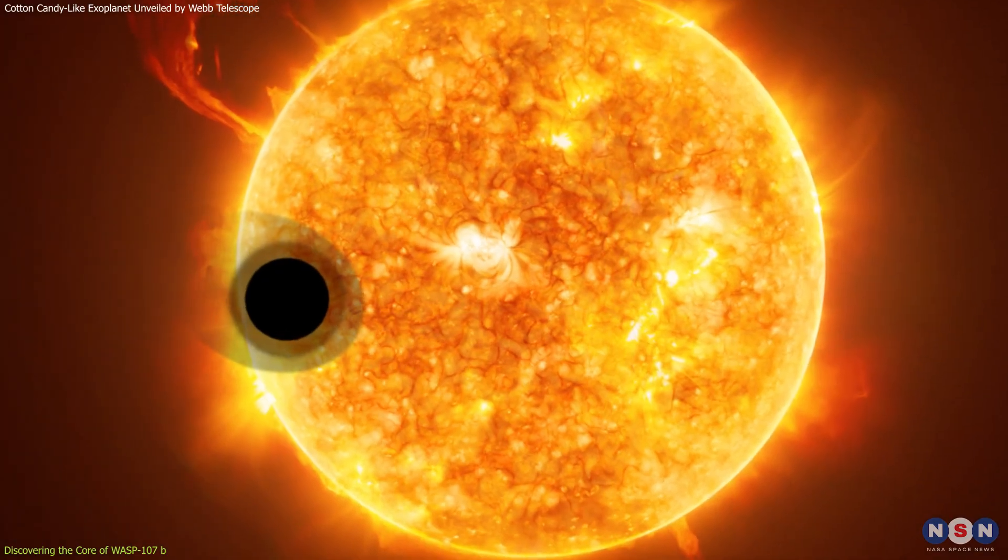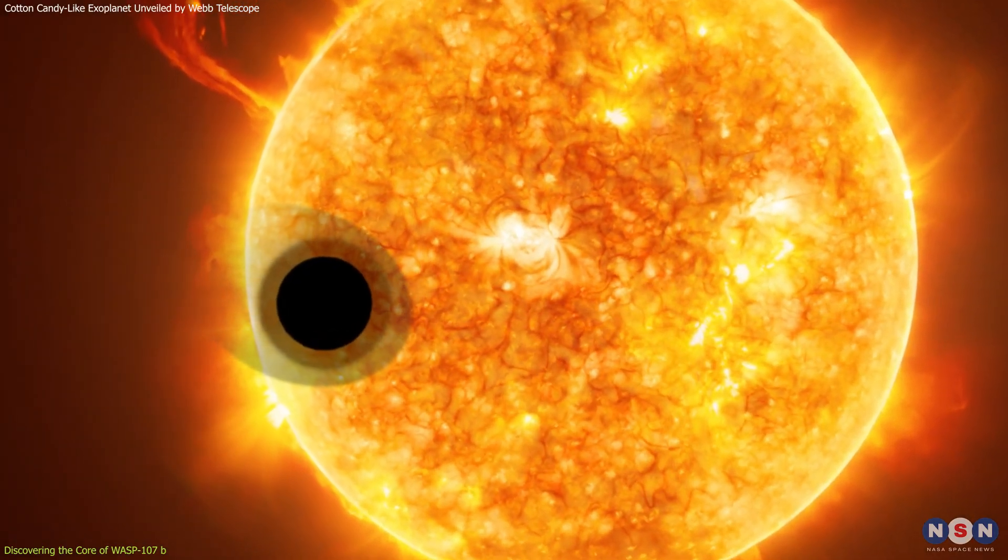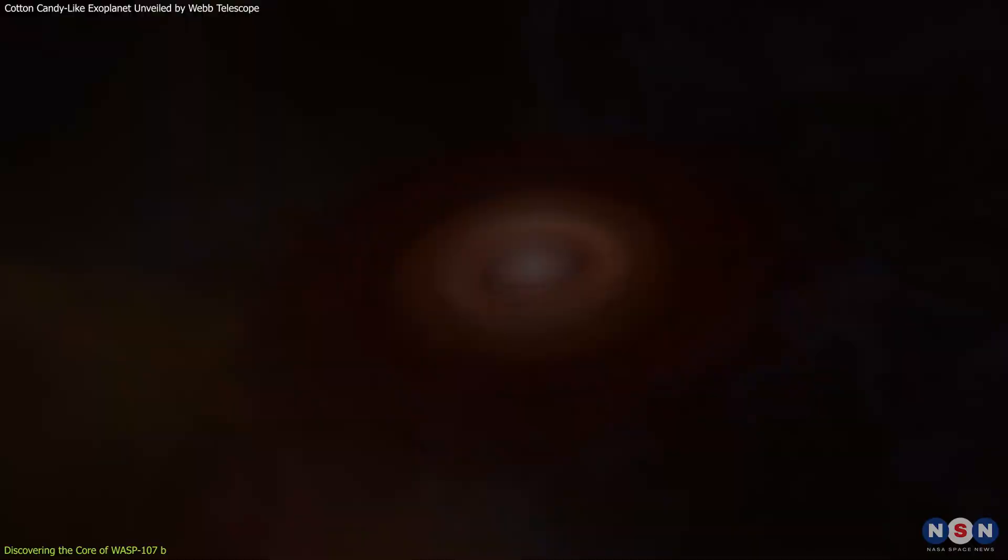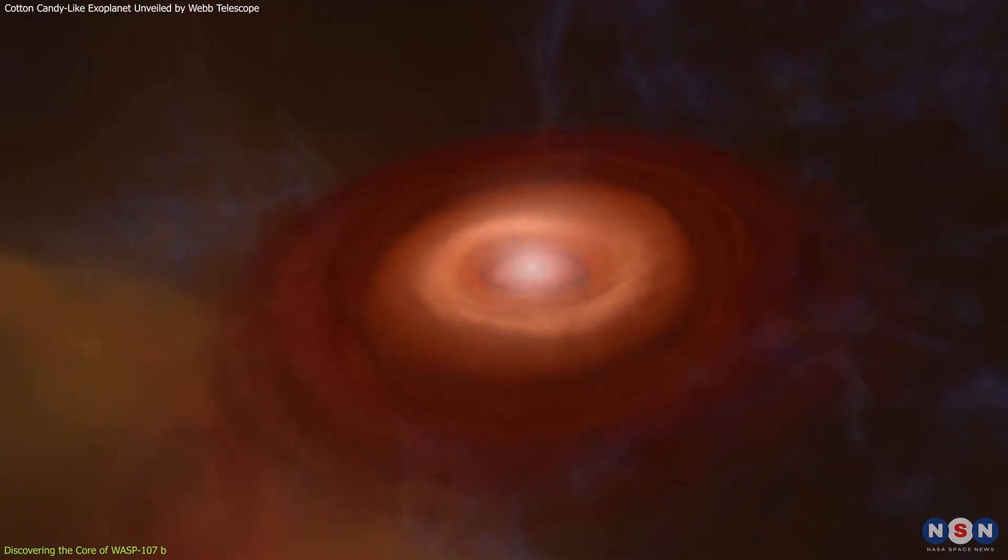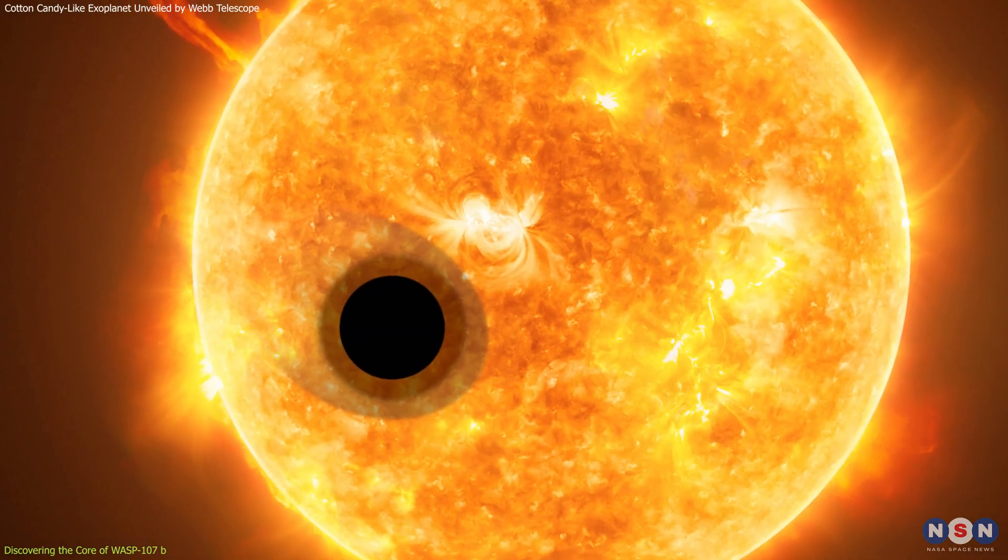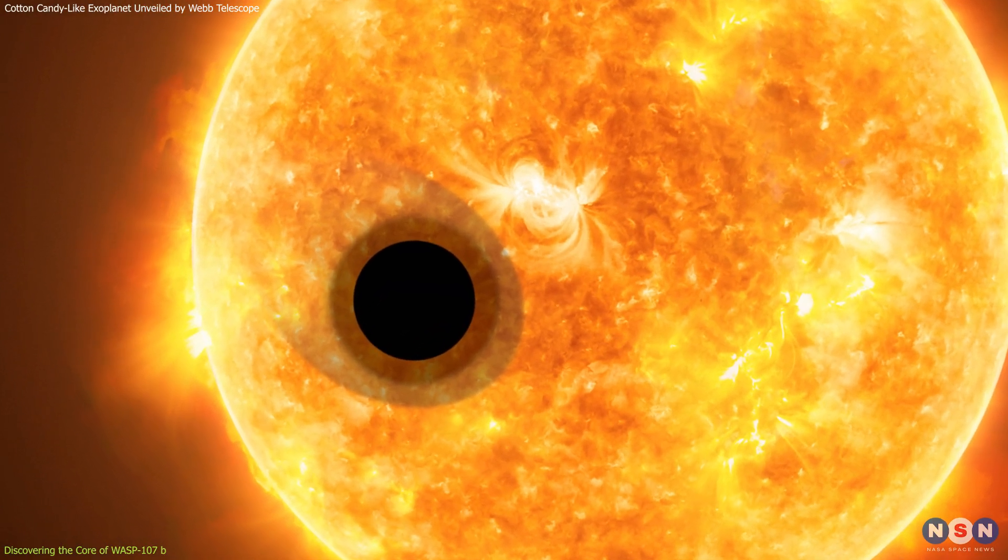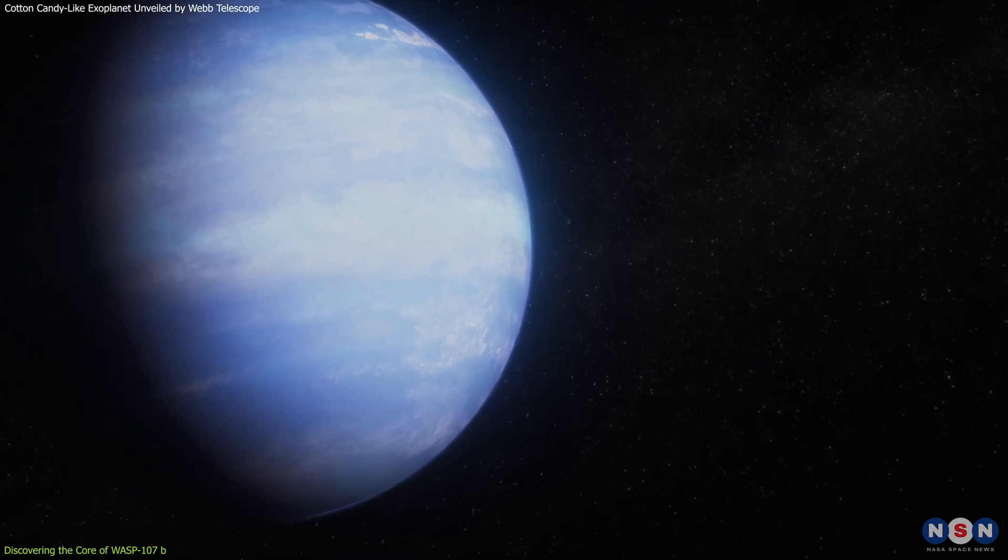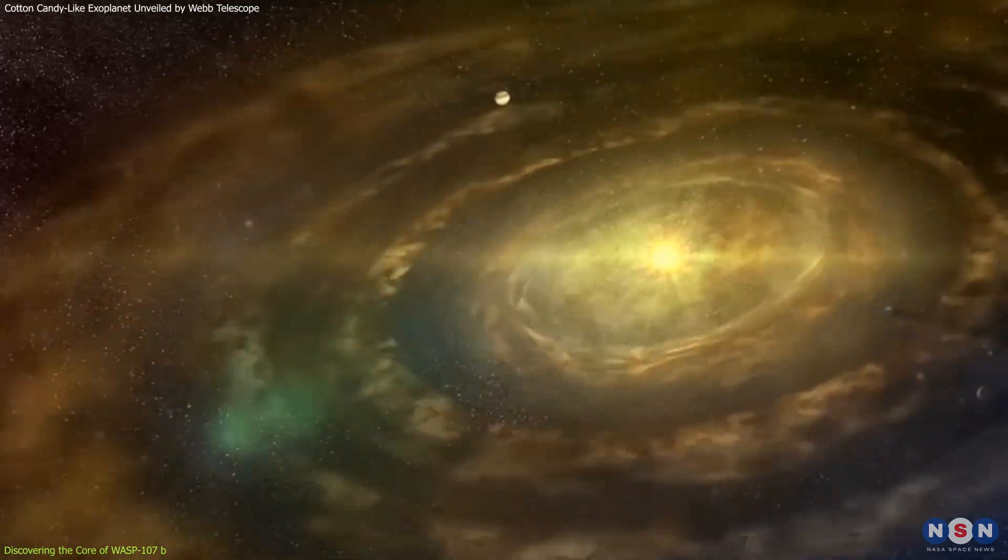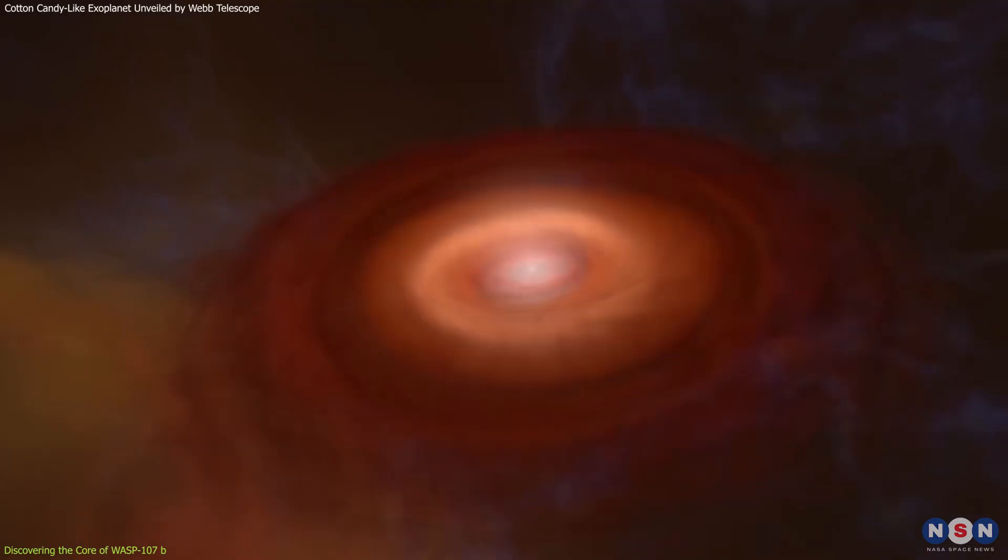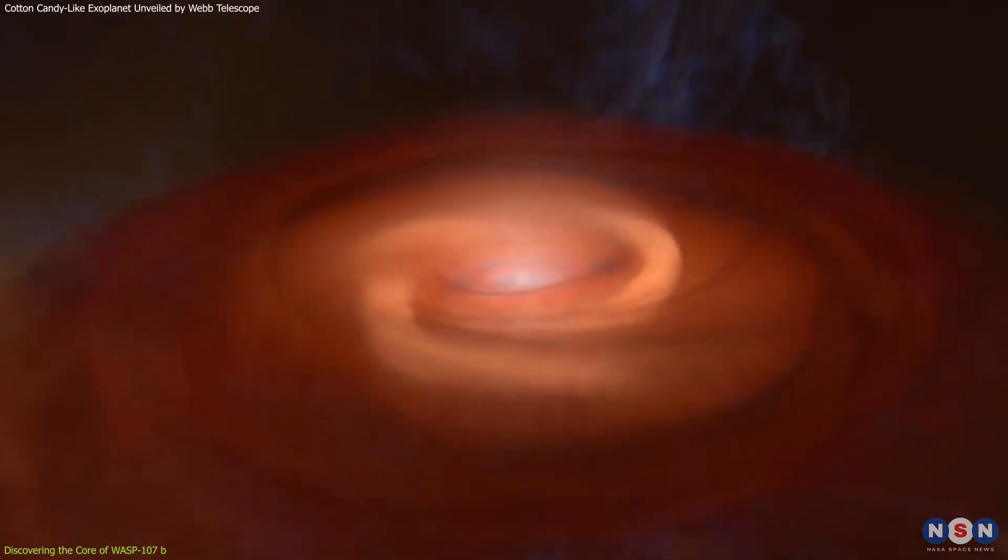The planet's core, surprisingly, is 12 times more massive than Earth's. This discovery is crucial for understanding the planet's formation and structure. The unusually massive core alongside the planet's low overall density suggests WASP-107b's formation deviated from traditional planetary formation models, which typically involve a gradual accumulation of gas and dust.